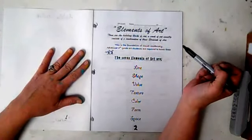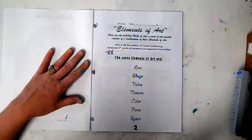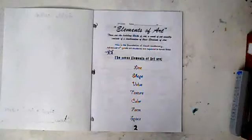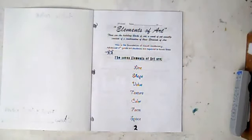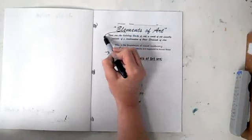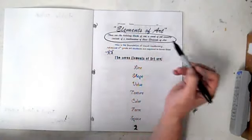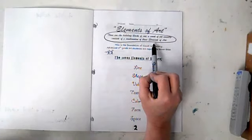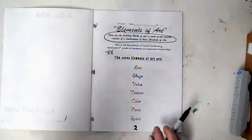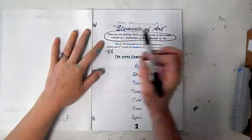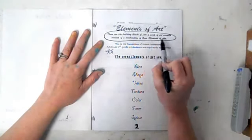Turn to the first page, the elements of art. I want you to focus down on your page, one, two, three. You should have a pencil ready and we're going to go through our elements of art. First page, circle this definition right here.